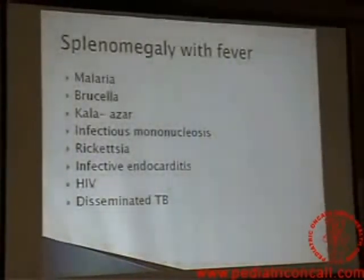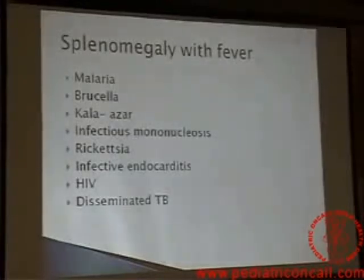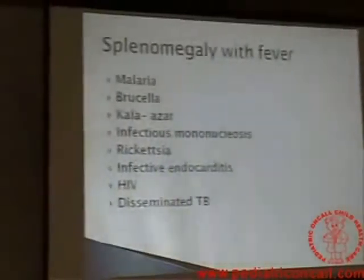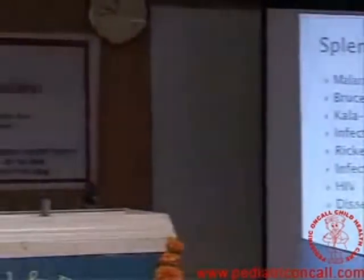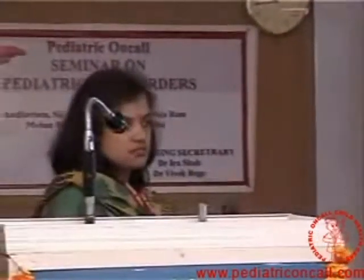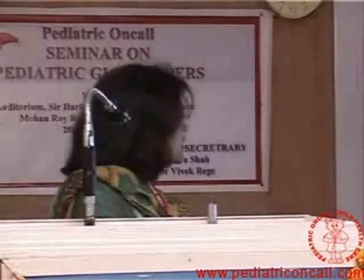Kala-azar — as we come from Western India, we don't see it in Maharashtra, but any child with anemia, persistent fever, and a palpable spleen, think of kala-azar. Infectious mononucleosis — which is of acute onset — presents with fever, splenomegaly, and lymph nodes; the child looks toxic. Rickettsia — classically you see a rash from head to toe, a maculopapular kind of rash, and you can ask whether there was a bite. So if you see a rash, fever, and anemia, think of Rickettsia.